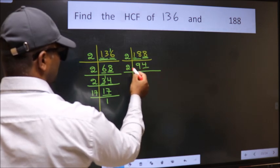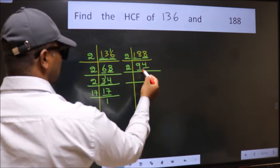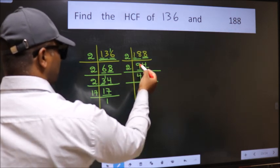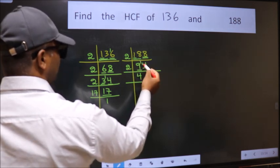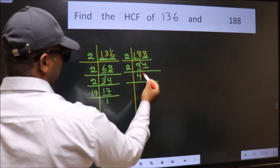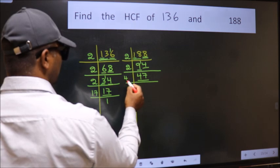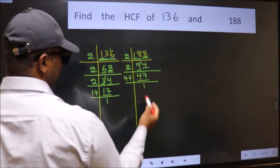Last digit 4, it's even, so take 2. First number 9, a number close to 9 in 2 table is 2×4 is 8. 9 minus 8 is 1, 1 carried forward 14. When do we get 14 in 2 table? 2×7 is 14. 47 is a prime number, so 47×1 is 47.